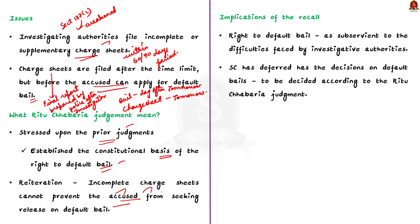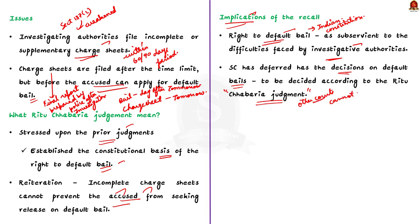However, in the recent interim order, the Supreme Court is considering recalling the Ritu Chabariya judgment. The author says that if the judgment is recalled, it might imply that the right to default bail — derived from the Indian Constitution — is inferior to the difficulties faced by investigative authorities. Additionally, the Supreme Court has suspended decisions on default bails across the country that were supposed to be decided according to the Ritu Chabariya judgment, meaning other courts cannot make decisions on default bail based on it. This will affect the constitutional rights of the accused.